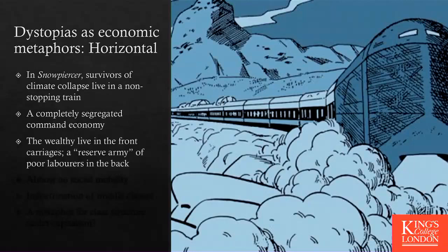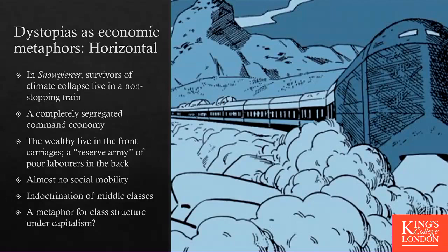In Snowpiercer, the rich are in the front carriages and the leader is at the front. The poor people are at the back — a reserve army of workers who have nothing, extremely poor. This situation is maintained first through indoctrination of the middle classes about the possibility of moving forward, and also through beliefs and indoctrination of the lower classes about the magical locomotive and the front carriages — some religious beliefs, basically fake. There is almost no social mobility. Sometimes people from poor carriages are taken to work in the middle ones, but it's a very strict class structure.